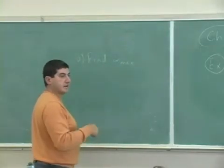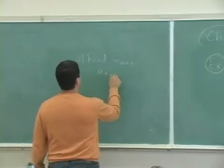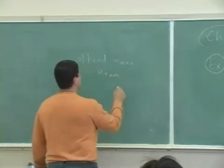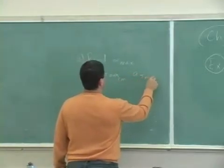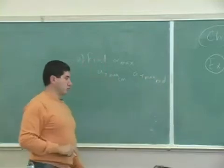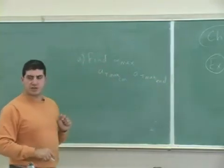And then once you find the maximum alpha, find A tangential maximum at the center of mass and A tangential maximum at the end. Find the end of the ruler. So from the alpha, we'll be able to calculate the A tangential. You see?